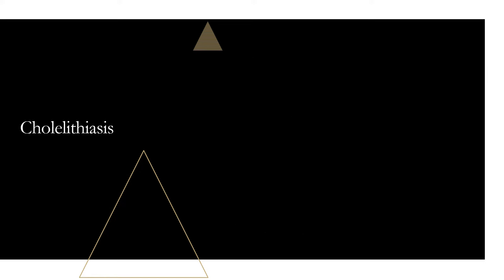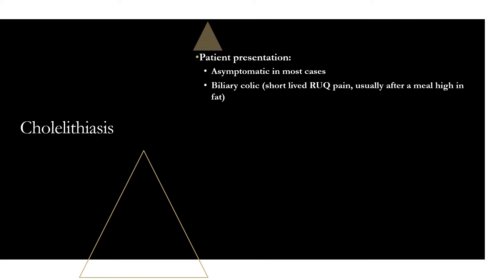As far as how these patients present, most of the time they're going to be asymptomatic. But you may see something called biliary colic — they may say they were eating a meal and suddenly had right upper quadrant pain that only lasted a couple of hours and then got better. Biliary colic is this short-lived right upper quadrant pain, usually after a meal high in fat. What happens is the gallstones are sitting in the gallbladder, they eat a fatty meal, the gallbladder contracts to release bile, and the stone can temporarily move into the neck of the gallbladder and block the cystic duct. Normally this is temporary — after a couple of hours, the stone goes back into the gallbladder, the pain dissipates, and they won't have any issues.